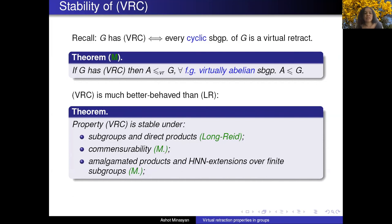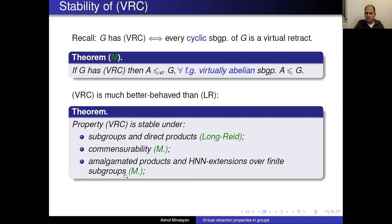Question about amalgamated products and VRC: if you have an amalgamated product of two groups with VRC over a finite subgroup, then the product has VRC. More generally, if you have a graph of groups with finite edge groups and vertex groups having VRC, then the fundamental group of the finite graph of groups also has VRC.